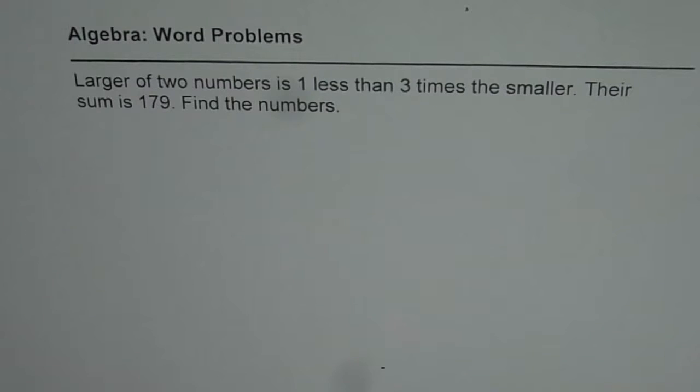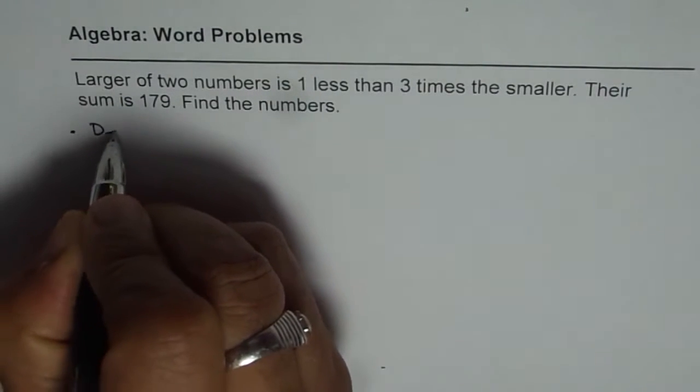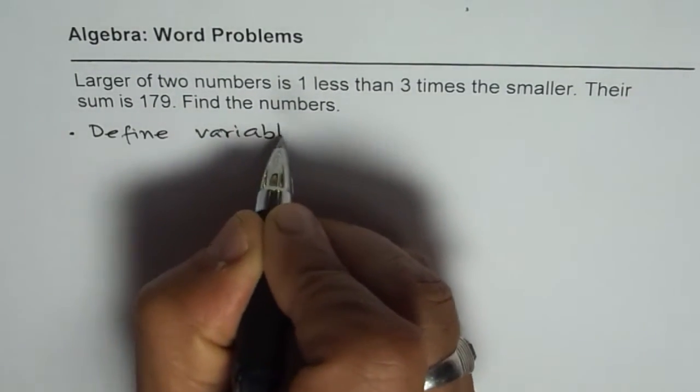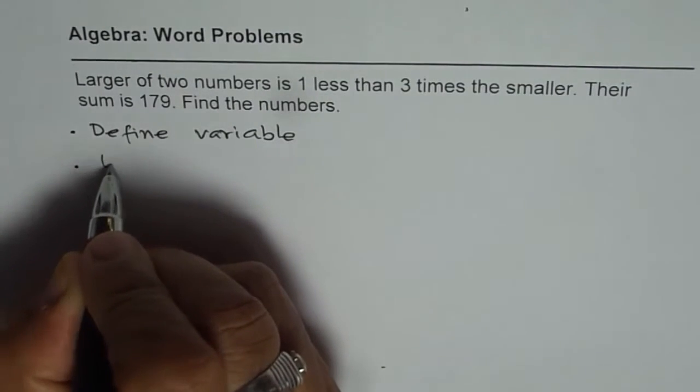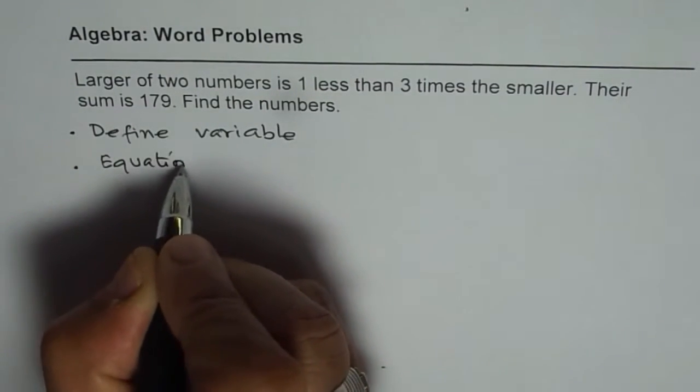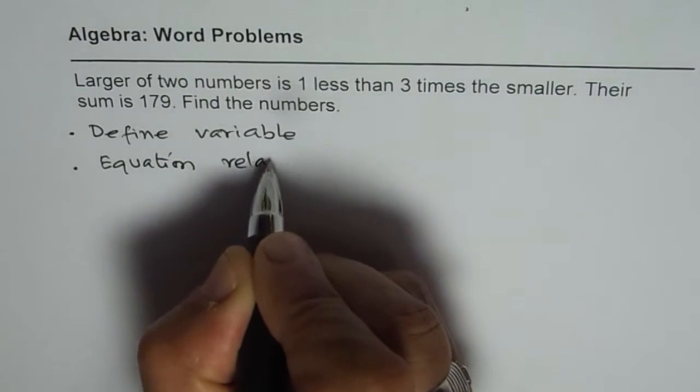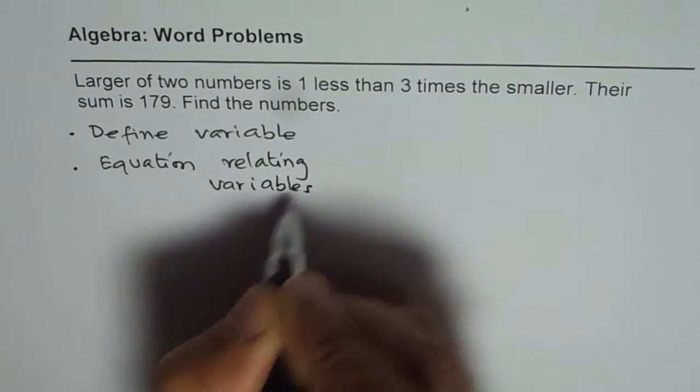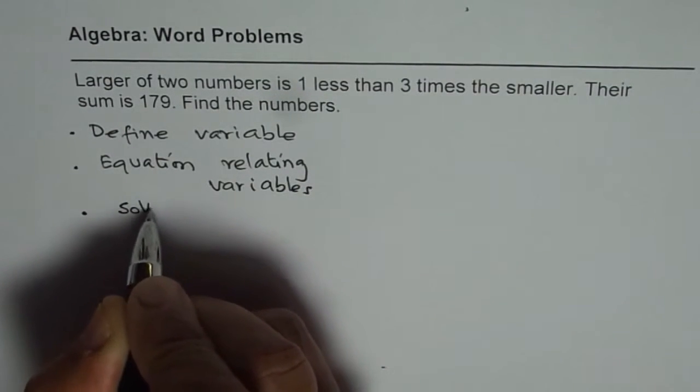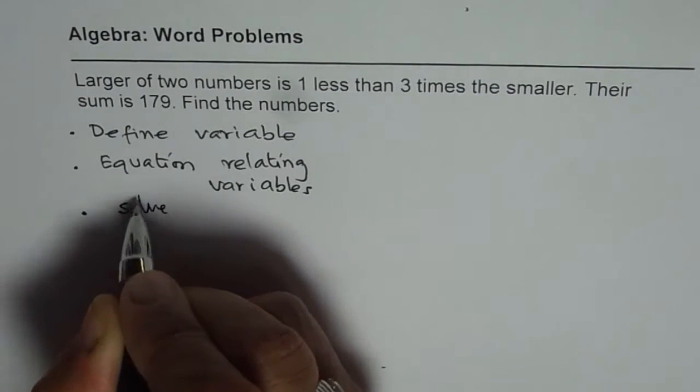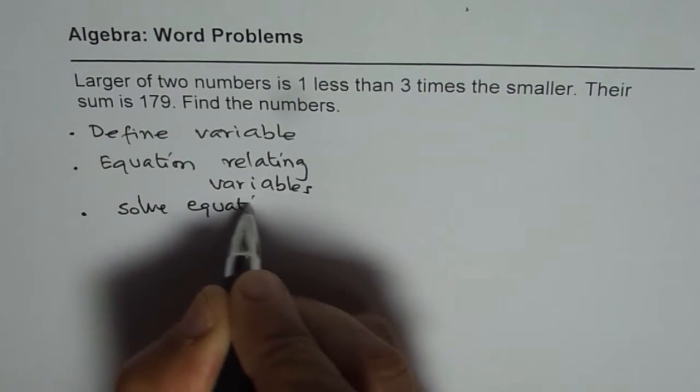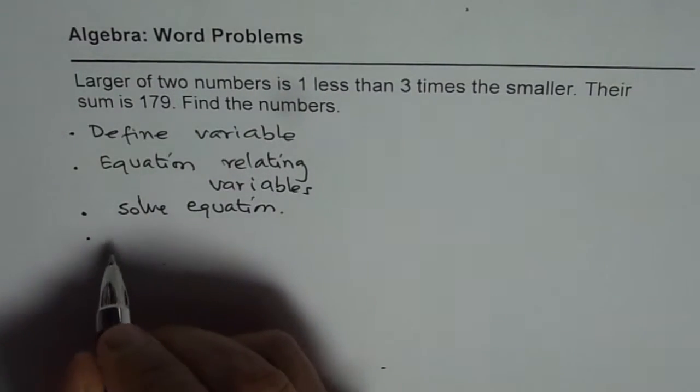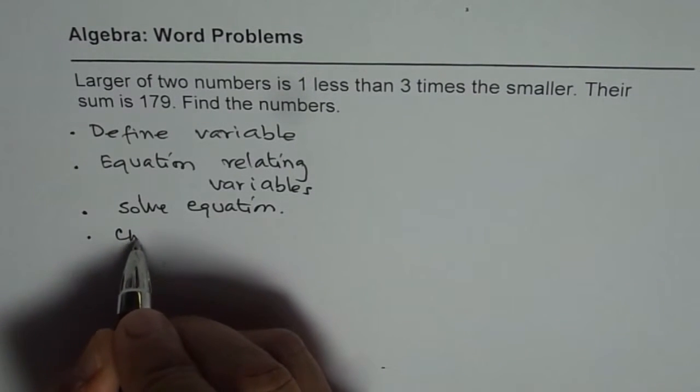Solving word problems means the steps to follow are: define variables, then write equation relating variables, and the third step is to solve equation. At times we also add one more very important step and that is to check solution.